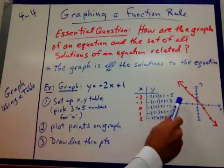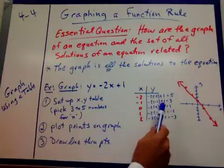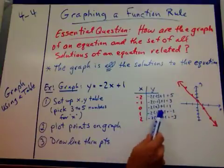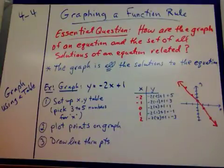Add the 1. And for when x is negative 2, y is 5. When x is negative 1, y is 3. 0, 1, 1 negative 1, 2 negative 3.